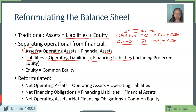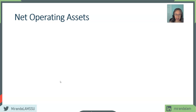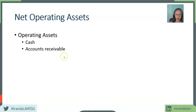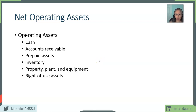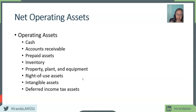Let's look in more detail at what goes into operating assets and operating liabilities. Net operating assets equals operating assets minus operating liabilities. Things that go into operating assets are mostly current assets: cash, accounts receivable, prepaid expenses, prepaid assets, inventory. Anything used for the day-to-day operation of the firm is also included — so property, plant and equipment, right-of-use assets, leasehold interests, patents, and intangible assets. Also less commonly, deferred income tax assets.